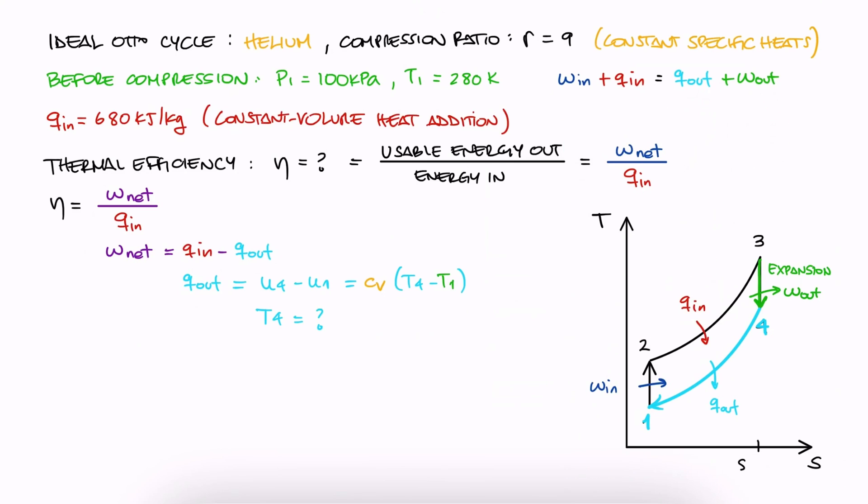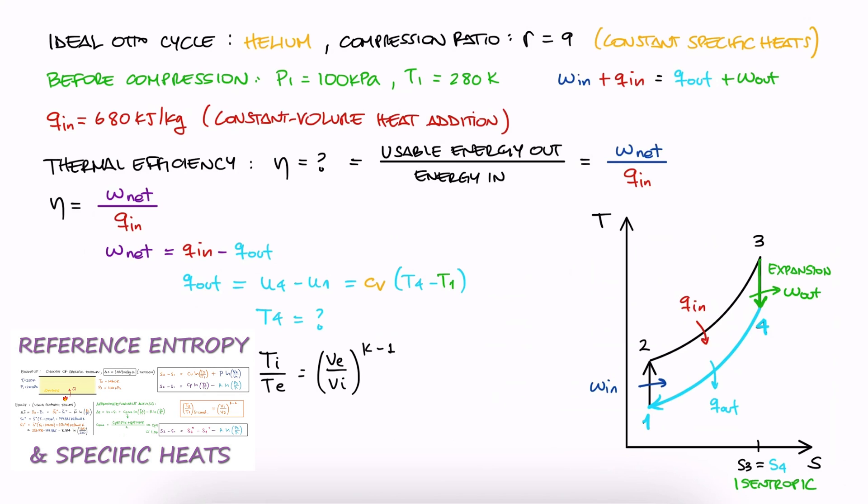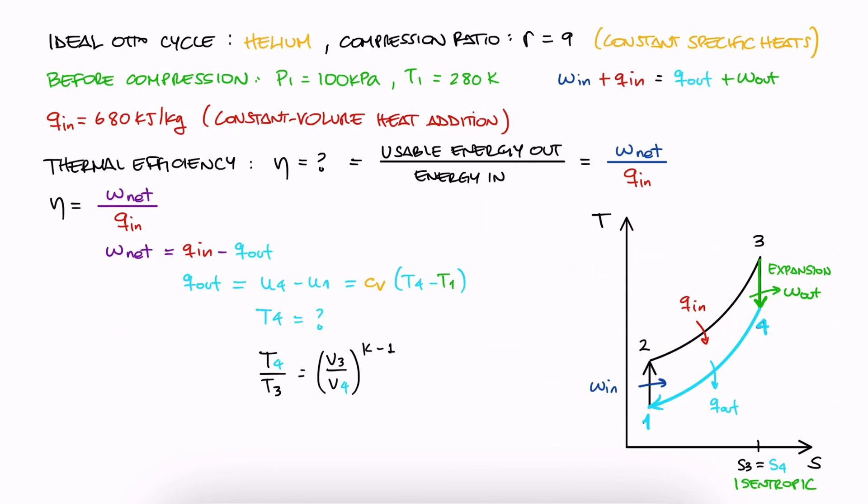Because state 4 is right after the expansion, and that expansion is isentropic, we can use the isentropic relationships we developed in the Reference Entropy 12-minute lecture, link below. We would do this between 3 and 4. This is the volume to temperature relationship of the then-labeled approximate analysis. And we use this one because we have the volume ratio, and we can find T3 just like we did in the previous example.